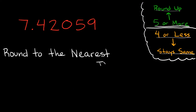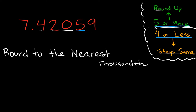Now let's say we were asked to round to the nearest thousandth. First we have to locate where the thousandths place is. This is the tenths, hundredths, thousandths. The number next to it is going to determine whether the zero stays a zero or rounds up to one. What number is next to it? We have a five. Is this five or more or four or less? This is five or more. So this zero right here we're going to round it up one number — instead of being a zero, it's going to turn into a one. Our answer would be seven point four two one.